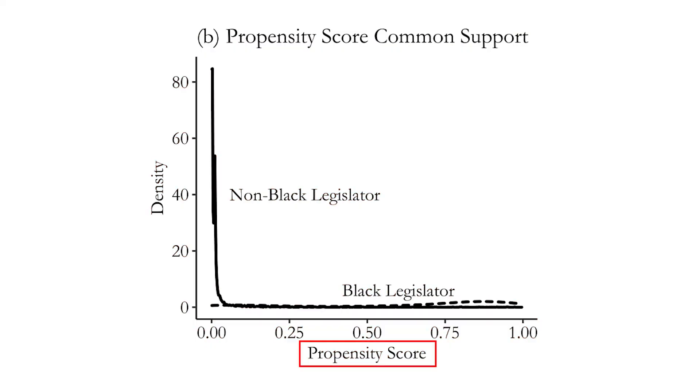If you're doing propensity score matching, you also want to make sure there is common support for the propensity score. To compare treated to non-treated groups, you need some treated people who had a decent probability of not being treated, and some untreated people who had a decent probability of being treated. Looking at the propensity score distribution for Black and non-Black legislators, we see the distributions are very much disjointed — there's not a lot of overlap.